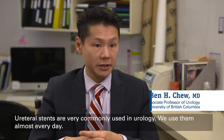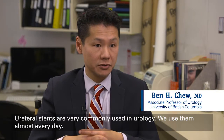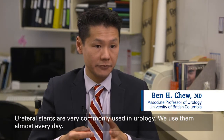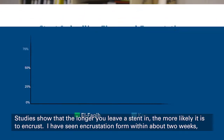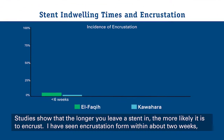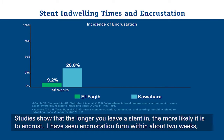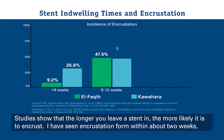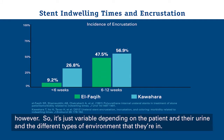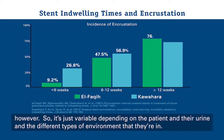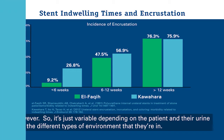Ureteral stents are very commonly used in urology — we use them almost every day. Studies show that the longer you leave a stent in, the more likely it is to encrust. I have seen encrustation form within about two weeks; however, it's variable depending on the patient, their urine, and the different types of environment that they're in.